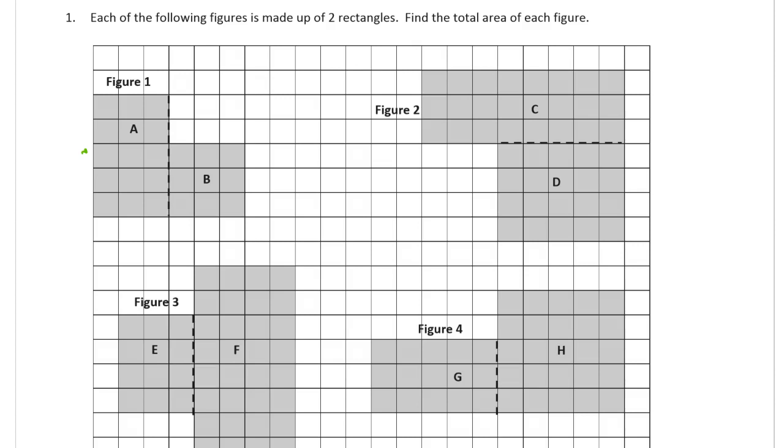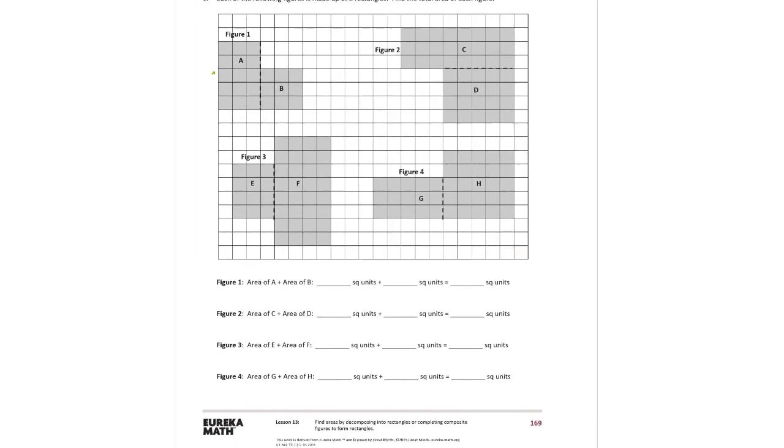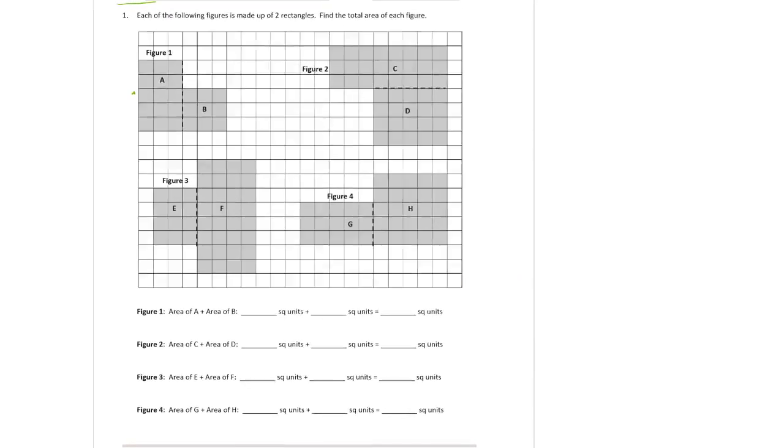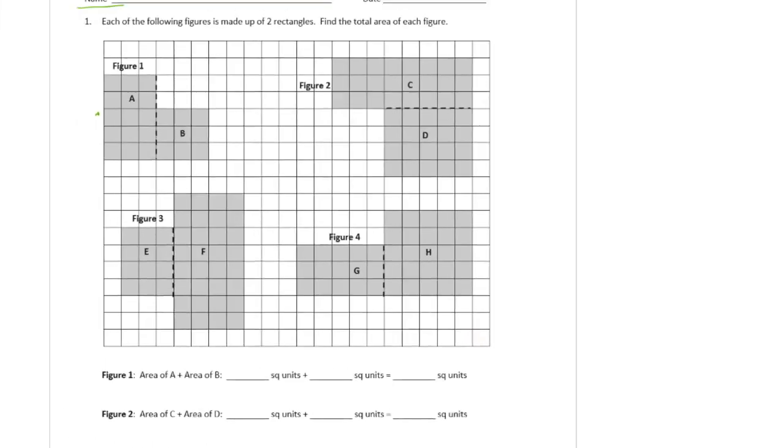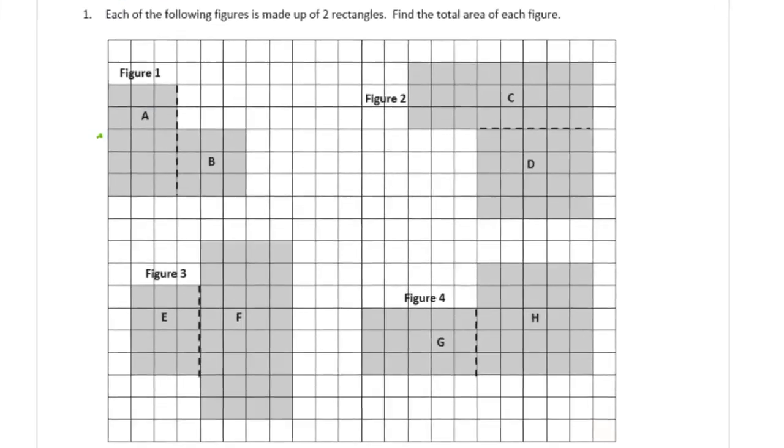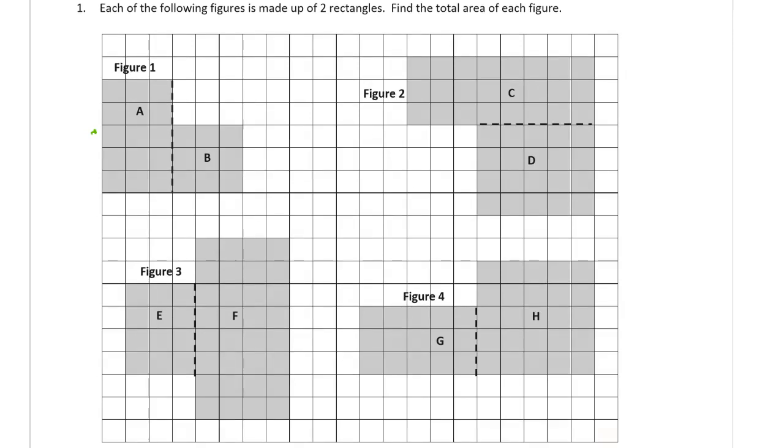So here are the pictures of them all, and the bottom of the page has where you write everything down. Let me just zoom back in on the pictures. So figure 1 has two rectangles. It's got this is rectangle A, and that's rectangle B. And the idea is that if you add the areas of those two rectangles together, you'll get the rectangle of this kind of L-shaped figure.